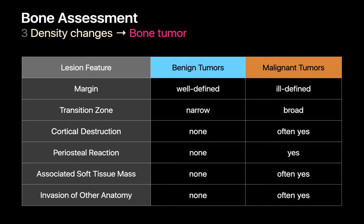After you complete the bone assessment, move on to the joint assessment, where you'll check joint alignment, the joint space, and for joint effusion.